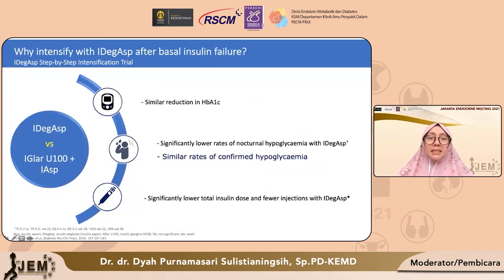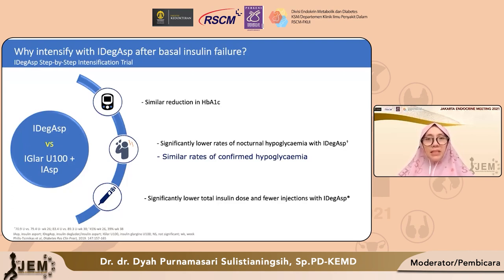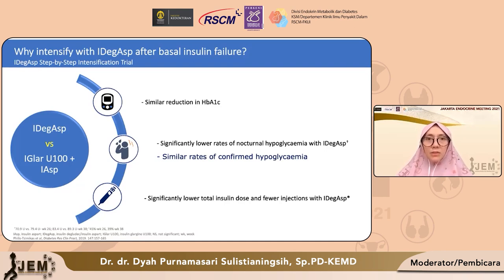Aspek yang dinilai diantaranya adalah pencapaian HbA1c. Ternyata pemberian IDeg-Aspart dua kali sehari dibandingkan dengan pemberian insulin basal plus atau basal bolus memiliki penurunan HbA1c yang serupa. Namun dalam hal nocturnal hypoglycemia, ternyata lebih rendah kejadiannya pada kelompok yang menggunakan insulin IDeg-Aspart dibandingkan dengan kelompok yang mendapatkan insulin basal plus. Untuk hypoglycemia secara umum memang mirip, namun untuk nocturnal hypoglycemia lebih rendah pada IDeg-Aspart. Secara total, jumlah insulin yang diperlukan juga lebih sedikit dengan IDeg-Aspart, baik jumlah injeksinya maupun total kebutuhan dosis hariannya.